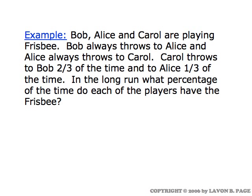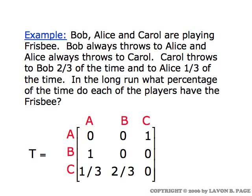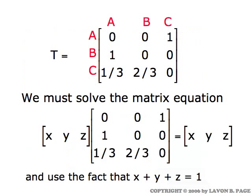We start with the transition matrix for Bob, Alice, and Carol. Alice always throws it to Carol, so our transition probabilities starting with Alice always show it going to Carol. Bob always throws it to Alice. Carol has a one-third probability of throwing it to Alice and a two-thirds probability of throwing it to Bob. Notice the zeros in three spots — nobody throws the frisbee to themselves. Alice does not throw it to Alice, Bob does not throw it to Bob, Carol does not throw it to Carol.